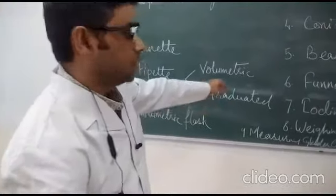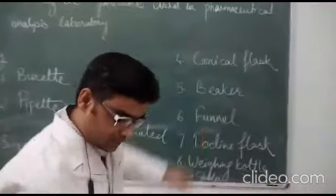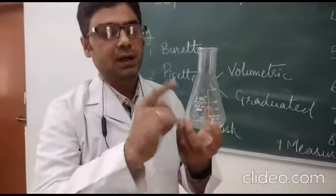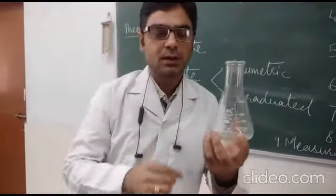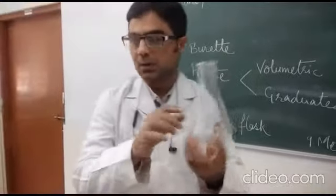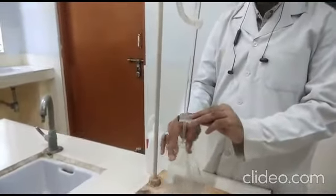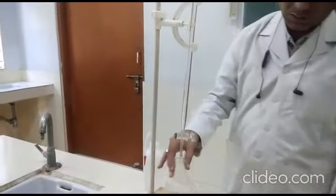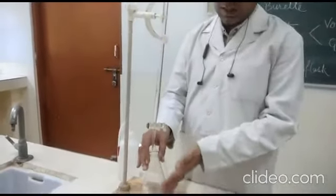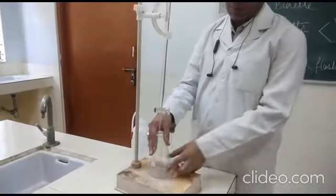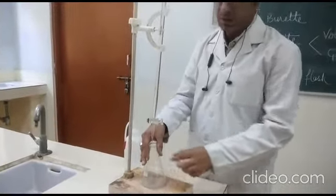Then we have the conical flask. This is a 250 ml conical flask. We have conical flasks of varied volumes. It is used to place the sample, and it is placed below the burette so that we can add the standard solution from the burette while swirling. Its shape is designed so that swirling does not allow the solution to spill out — that is why it has a beak-like shape.